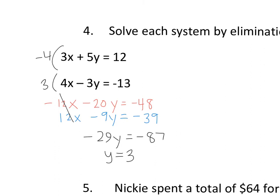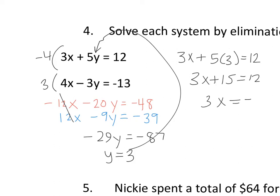And now you can plug 3 back into any of these equations. So 3x plus 5 times 3 equals 12. 3x plus 15 equals 12. 3x equals negative 3. 3x equals negative 1. So your solution is negative 1, 3.